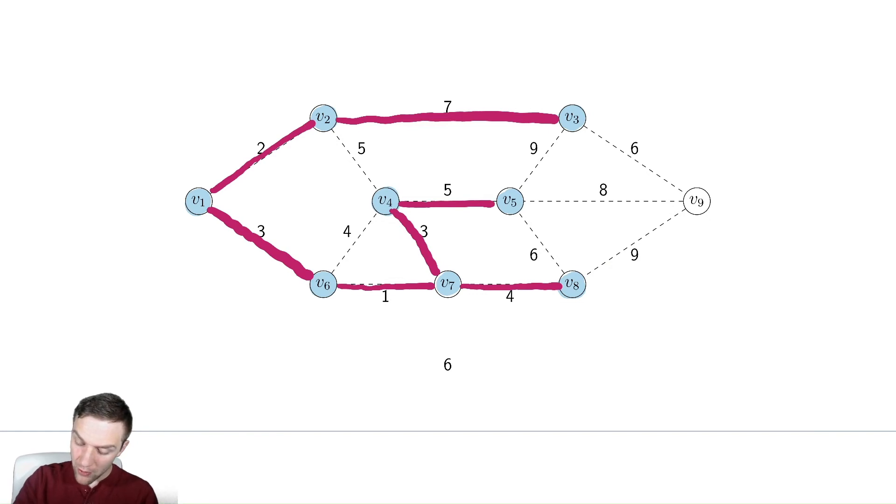And now we need to add v9, and maybe the easiest way to do this is just look at the edges connecting v9. We have eight, or sorry, nine, eight, and six. Six is the winner of that battle.